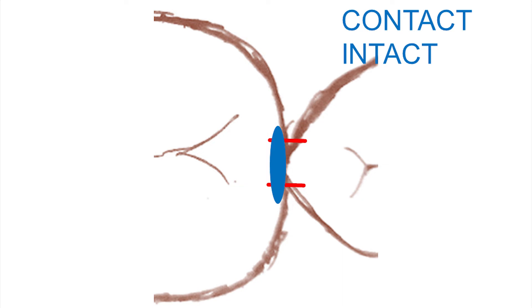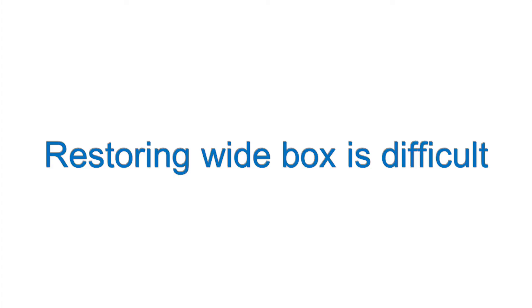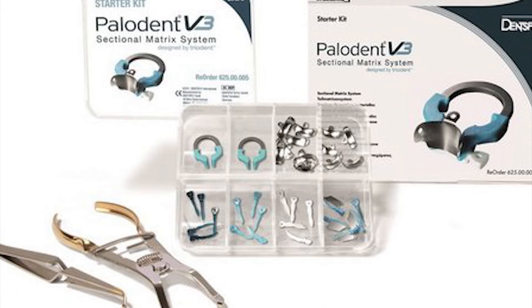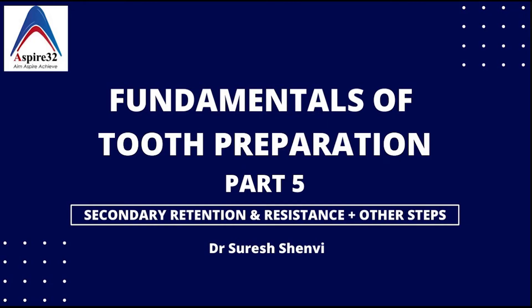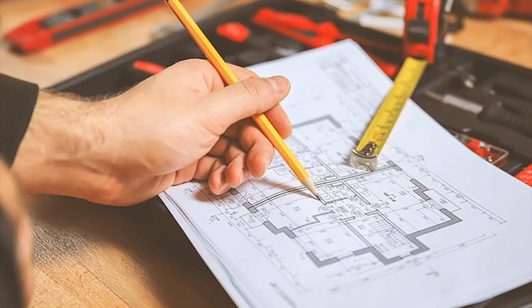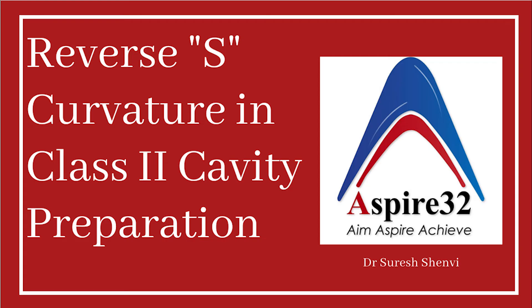In the second scenario, where caries is larger than the buccolingual dimension of the contact, the primary objective is to remove the caries first. Since it is more than the contact, you will end up with more clearance, and that's acceptable. The problem with a wide proximal box is difficulty in building the proximal contact with a direct restoration, and reduced tooth structure means risk of fracture. In these situations, it is better to use an advanced matrix system, secondary resistance and retention features, or an indirect restoration.